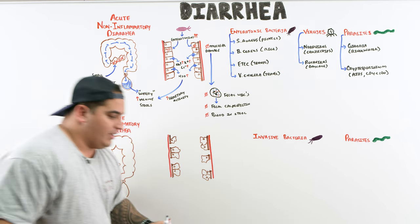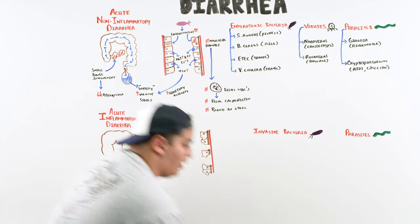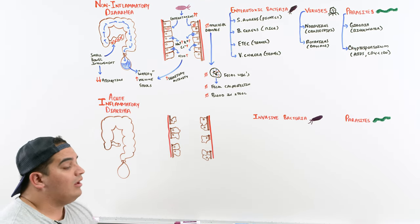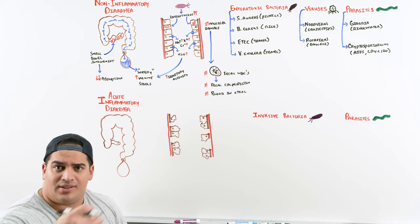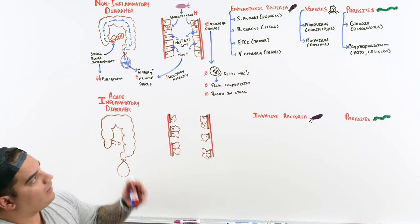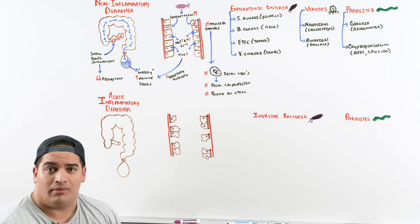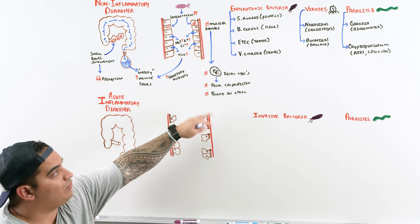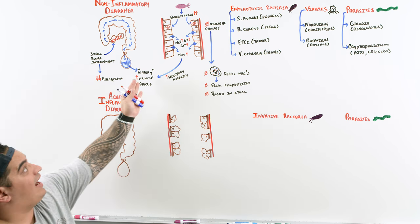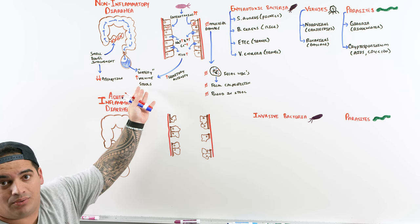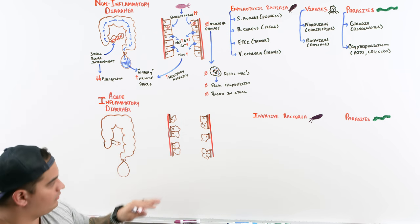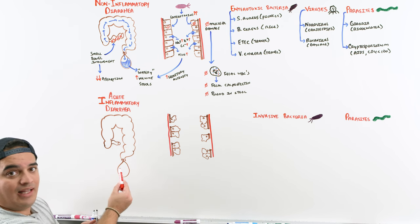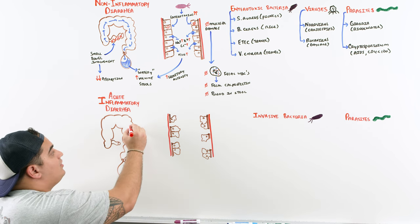The second type: a patient comes in with three or more loose stools per day for less than two weeks. You ask: is it acute non-inflammatory or acute inflammatory? Key questions include: does the stool look bloody or mucousy, or is it high-volume and watery?